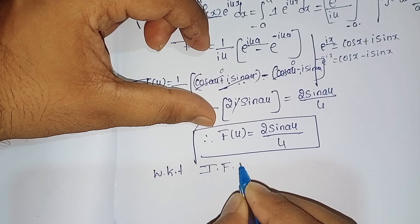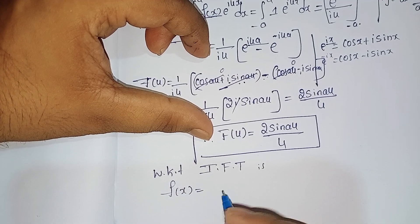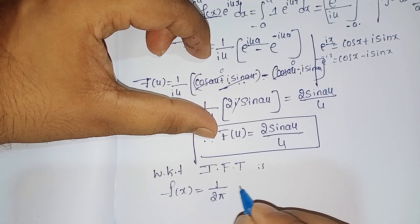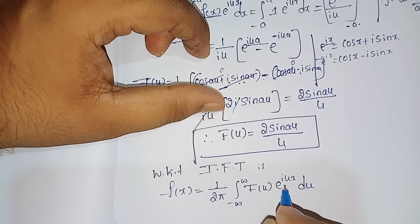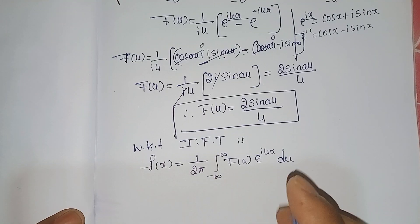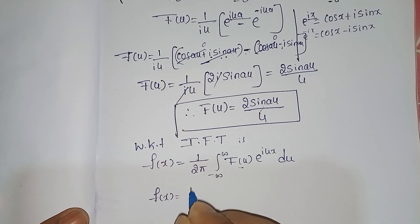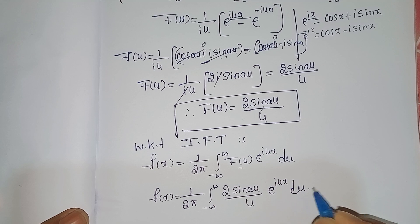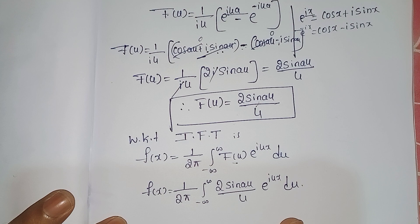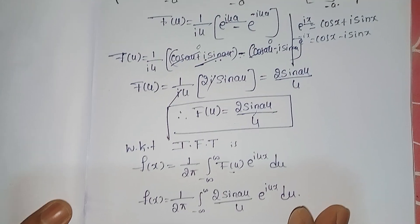Now I will write the inverse Fourier transform formula: f(x) = (1/2π) times the integral from minus infinity to plus infinity of F(u) e^(−iux) du. Remember, when operating the inverse Fourier transform the integration is always with respect to u. Substituting F(u) = 2 sin(au)/u, we get f(x) = (1/2π) times the integral from minus infinity to plus infinity of [2 sin(au)/u] e^(iux) du.